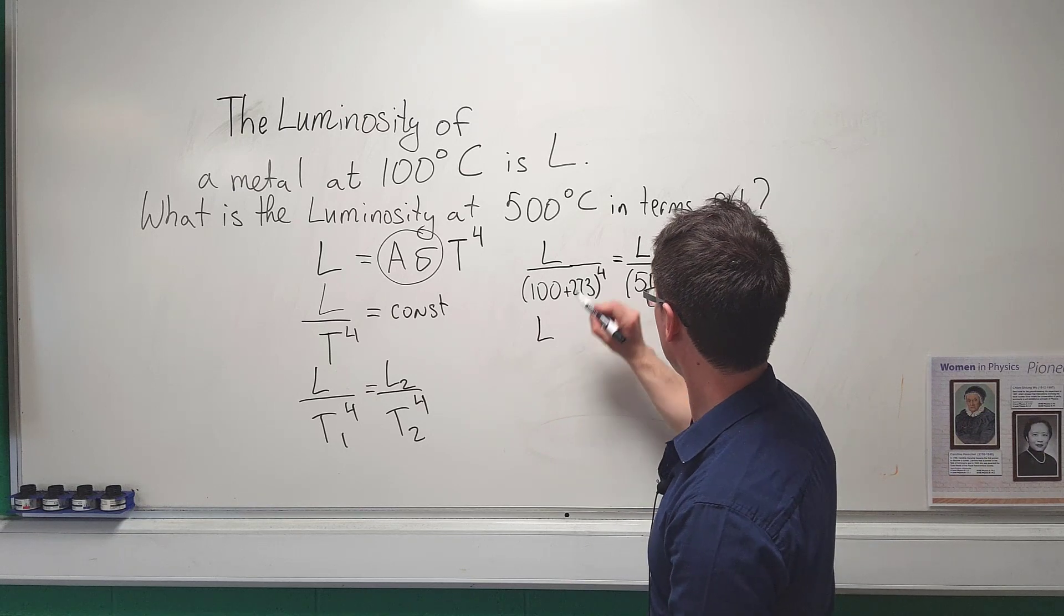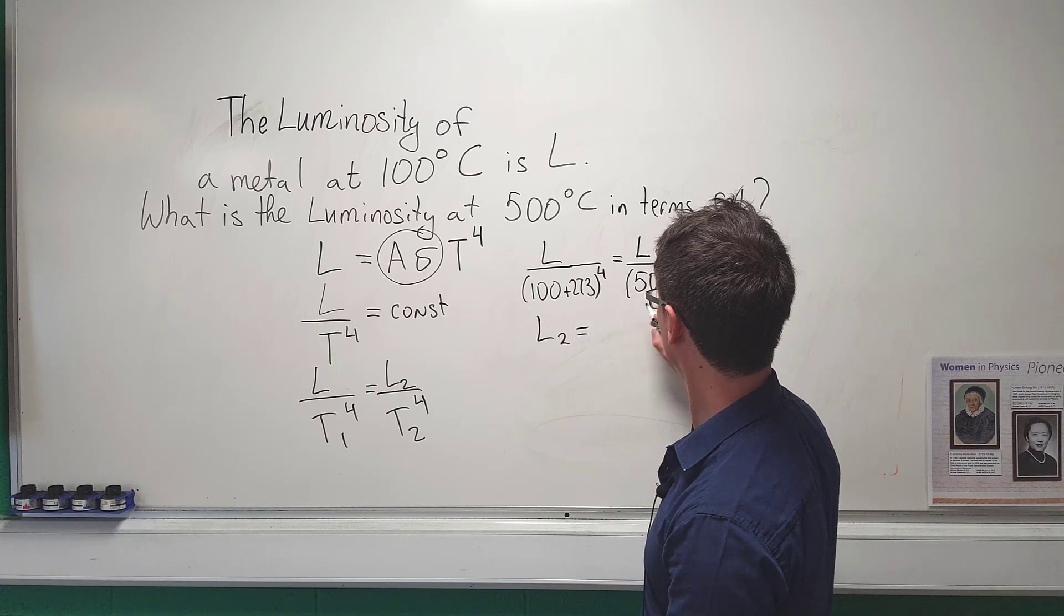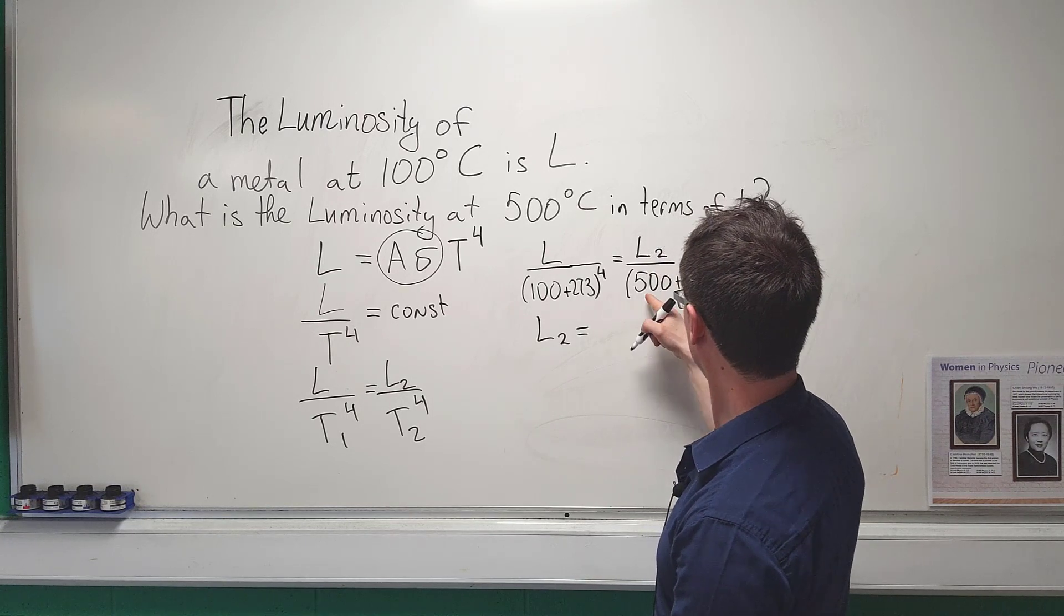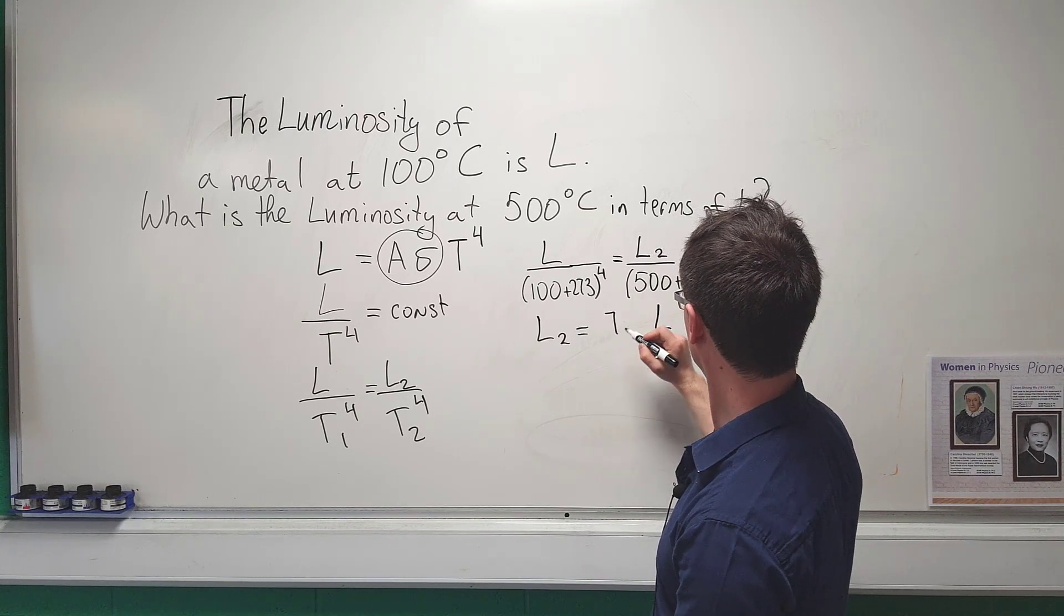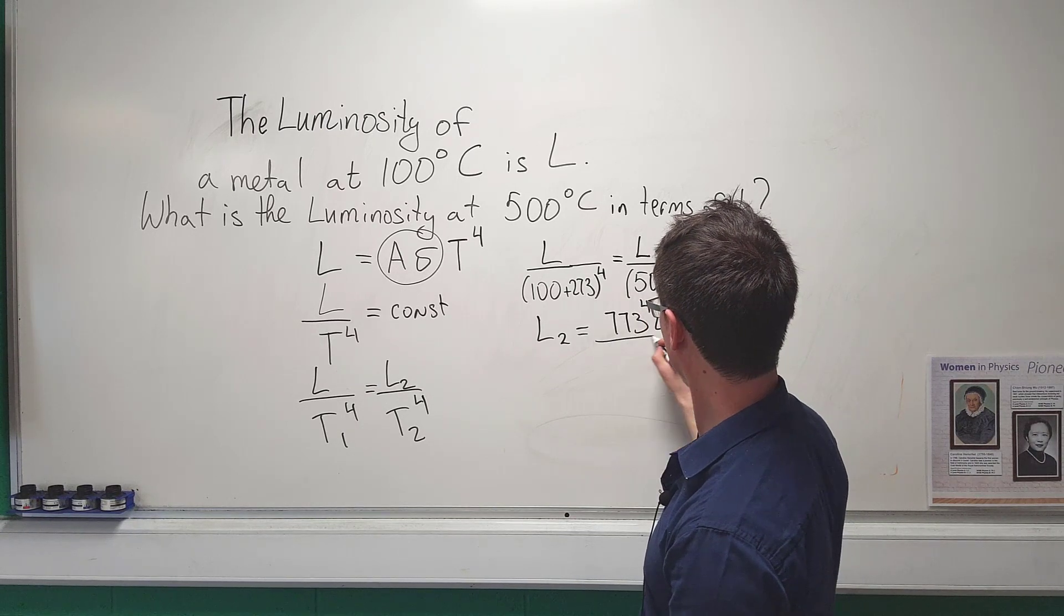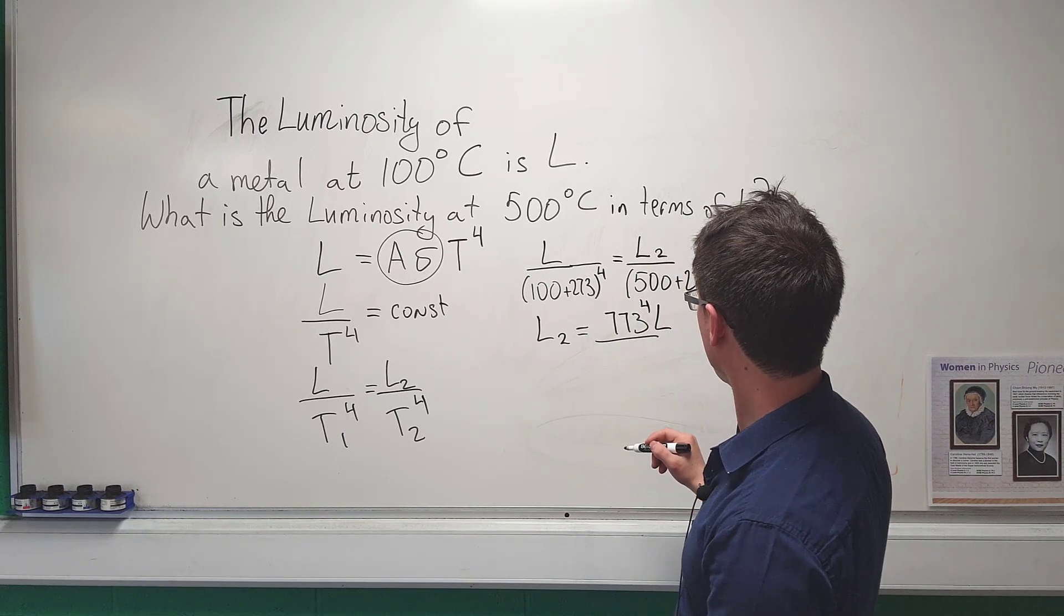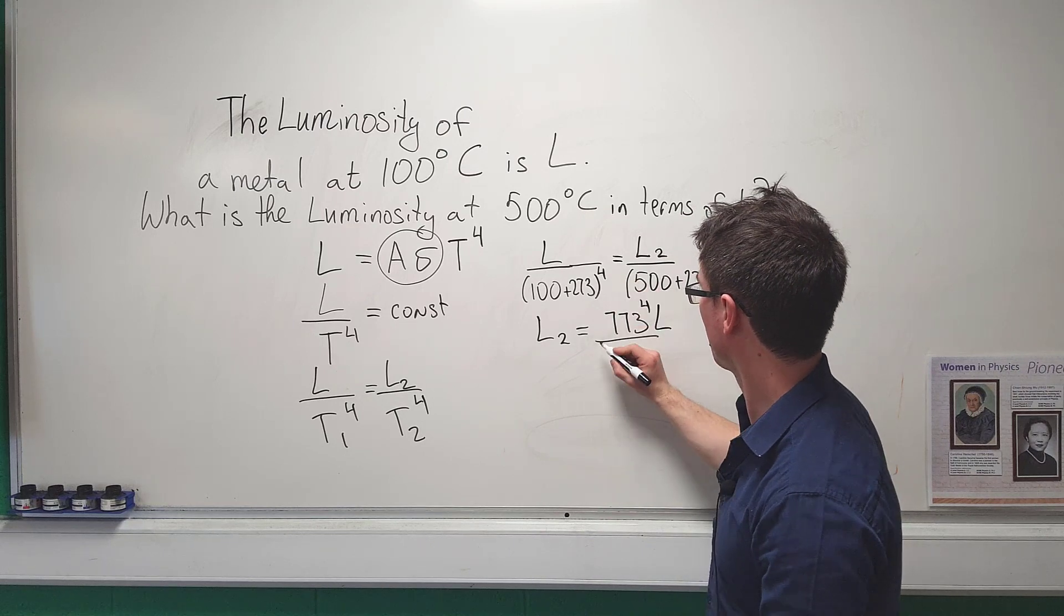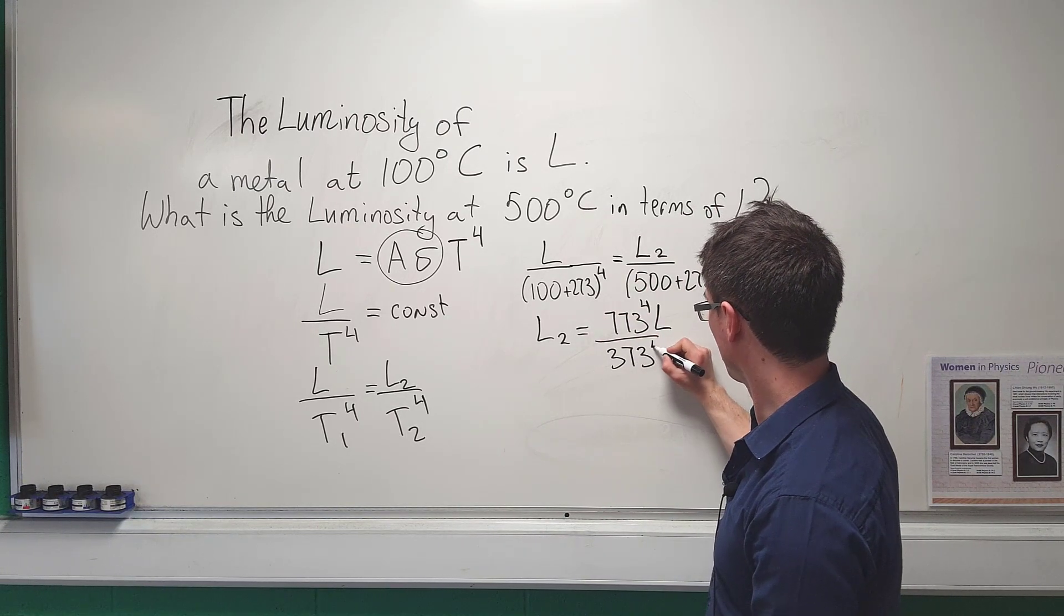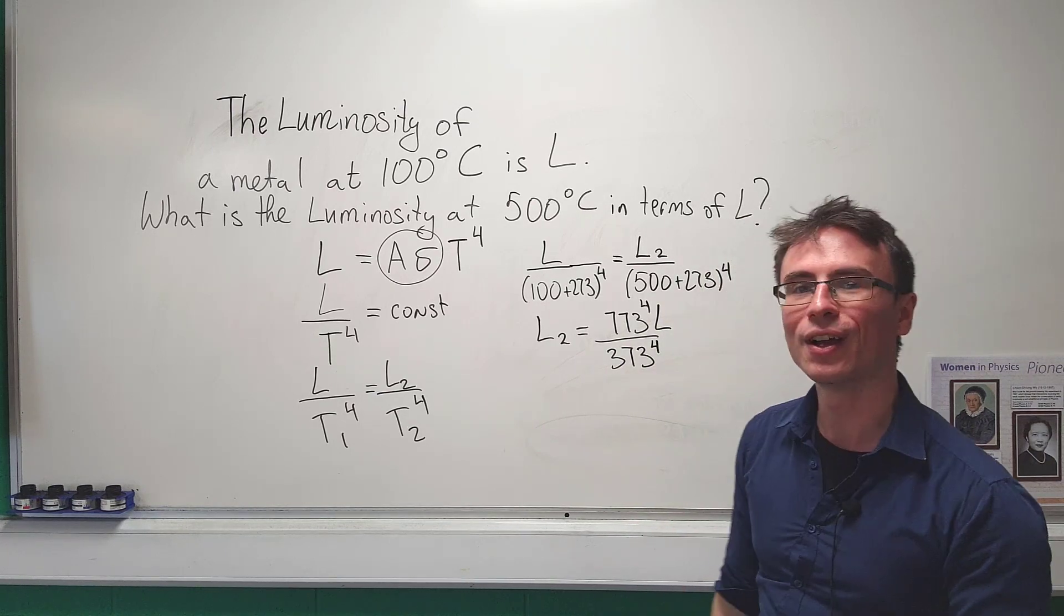This of course means that L2 will be equal to L, then we're going to have 773 raised to the power of 4 and then this will be divided by 373 raised to the power of 4.